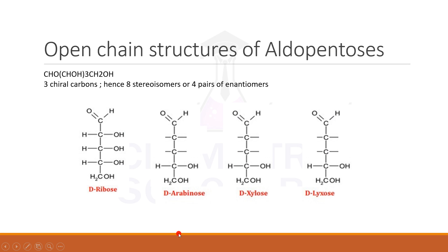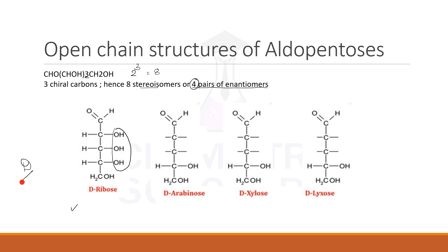As you increase the number of carbon atoms, the complexity also increases. When you have 3 chiral carbon atoms, 2³ = 8 stereoisomers, meaning 4 pairs of enantiomers. Let's start with D-ribose. To make it simple, we will keep all 3 OH groups on the same side — the right hand side — because we are drawing D series first, and the second last carbon's OH is always on the right hand side for D series.